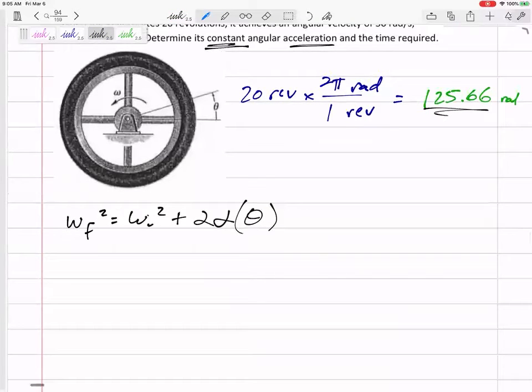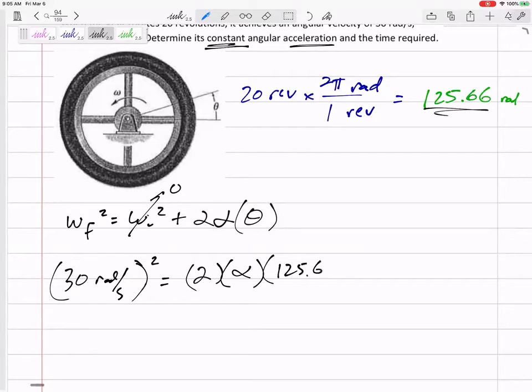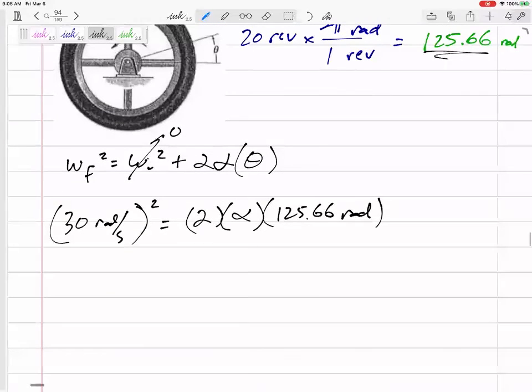Alright, so omega final squared, the 30 radians per second squared, equals - it started from rest - equals 2 alpha, which is what we're looking for, times theta 125.66 radians. So in order for all these units to work out, that alpha should be in radians per second squared. So yeah, units do work out.